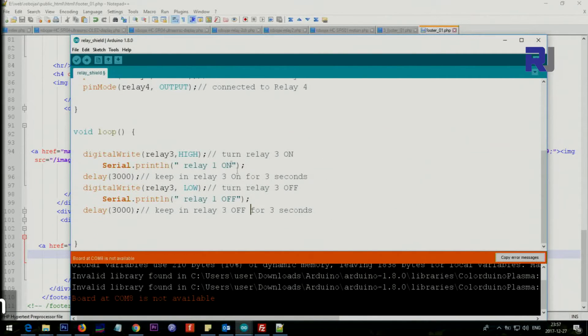And then, so now here it says keep relay, make relay 3 high. So this will turn on the relay 3. This will print the text for us. So it plays with this and then keeps it for three seconds on, and then make it off. So this is relay 3 off, low means off, and print this. And then wait for three seconds, which means keep it low for three seconds.